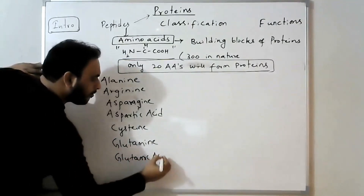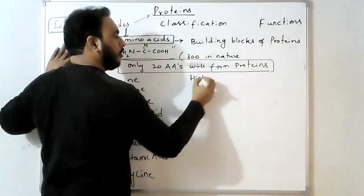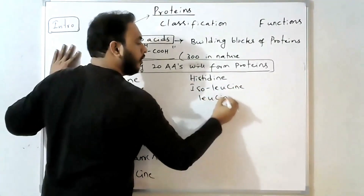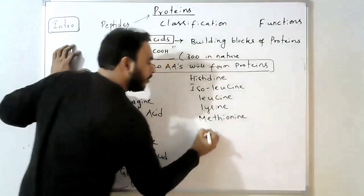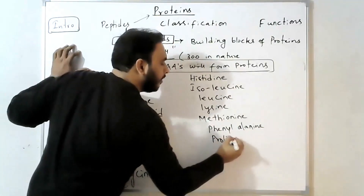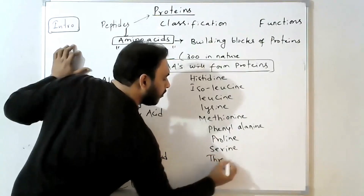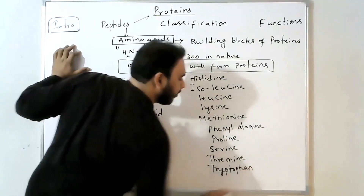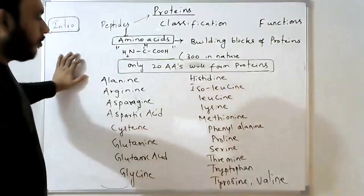The 20 amino acids that form proteins are: glutamic acid, glycine, histidine, isoleucine, leucine, lysine, methionine, phenylalanine, proline, serine, threonine, tryptophan, tyrosine, and valine — all 20 listed in alphabetical sequence.